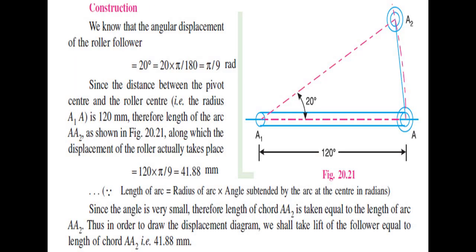Here is the construction. After understanding the statement of the problem, we concentrate on the analysis. The angular displacement of the roller is given as 20 degrees, which is 20 × π/180 = π/9 radians. The distance between the pivot center and the roller center, that is A to A1, is 120 mm.